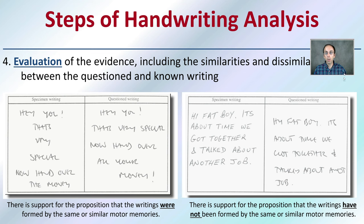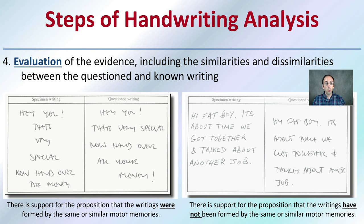We want to have this evaluation process of the evidence, including similarities and dissimilarities between the questioned and known. There is support proposition of these were made and formed by the same or similar motor memories. And these were likely not formed by the same motor memories. So again, making this comparison between the two.